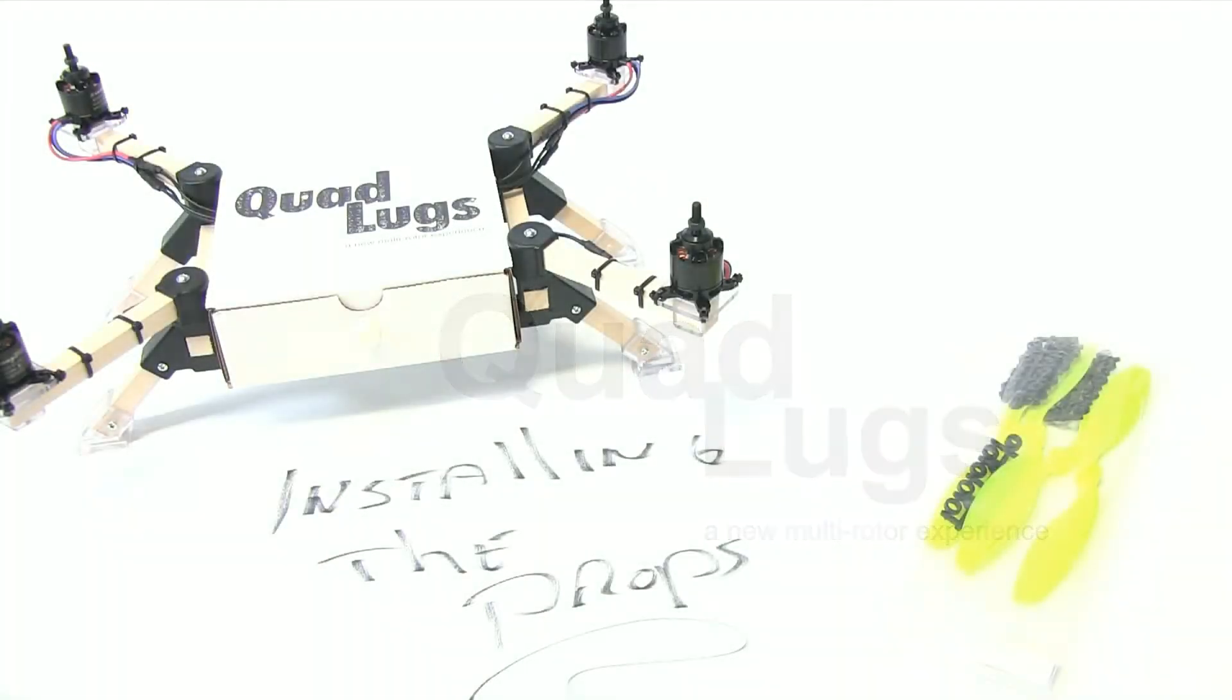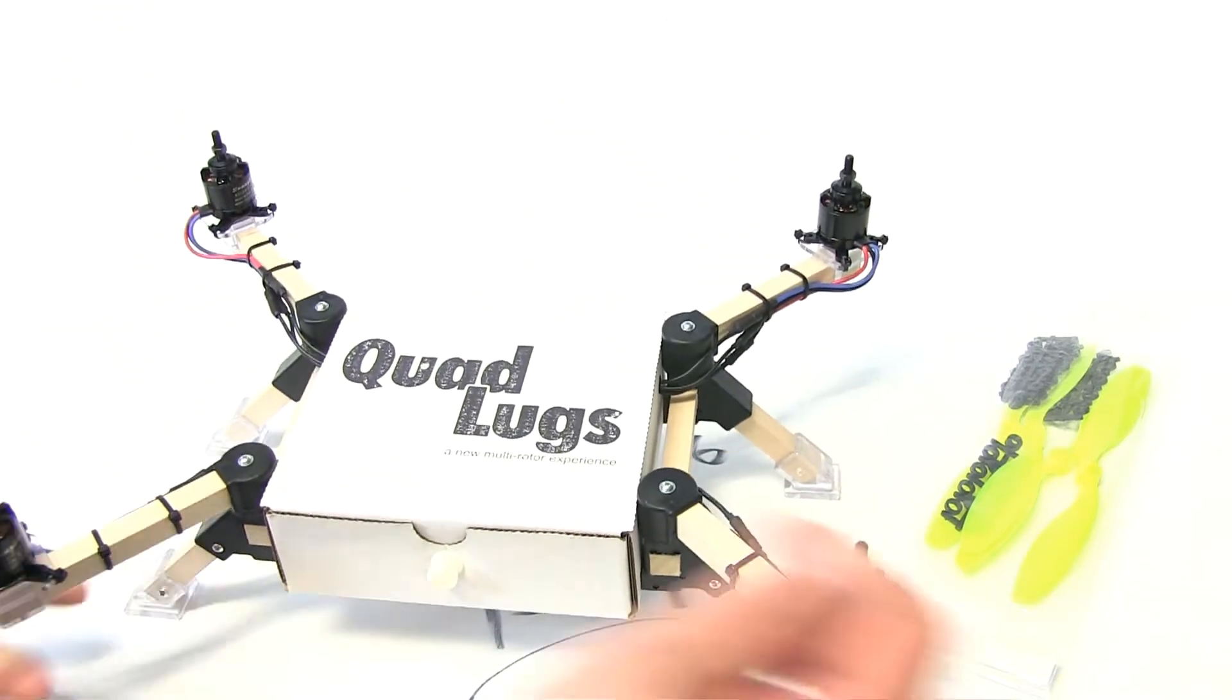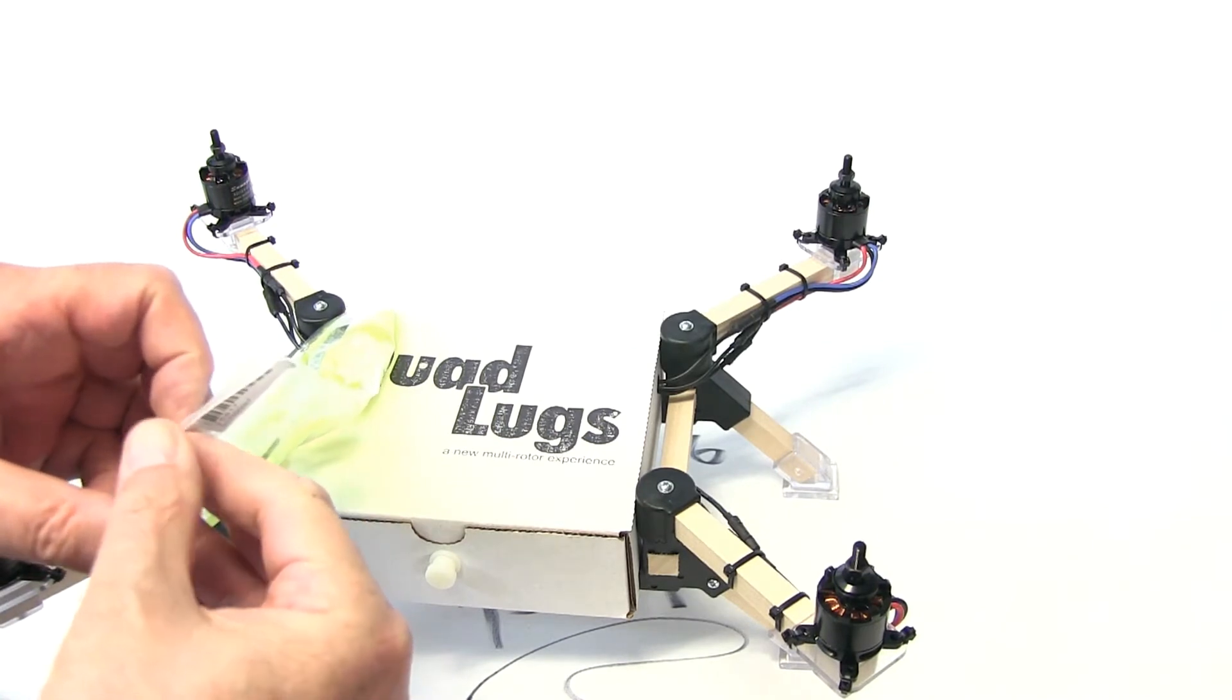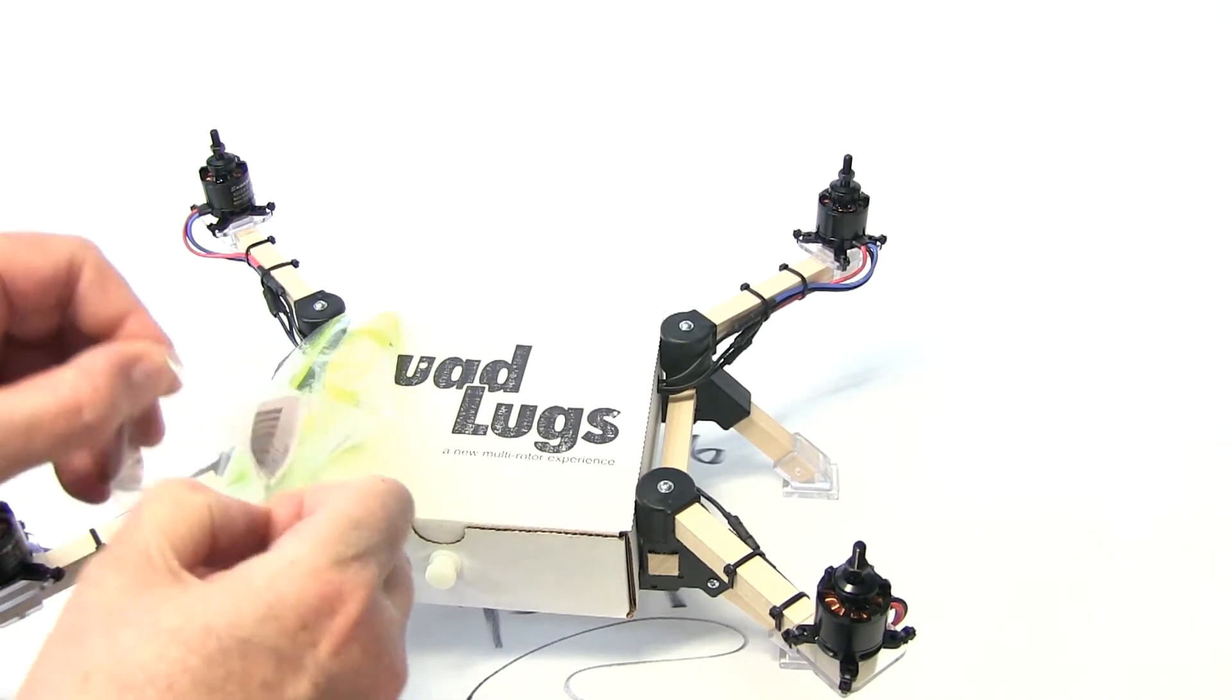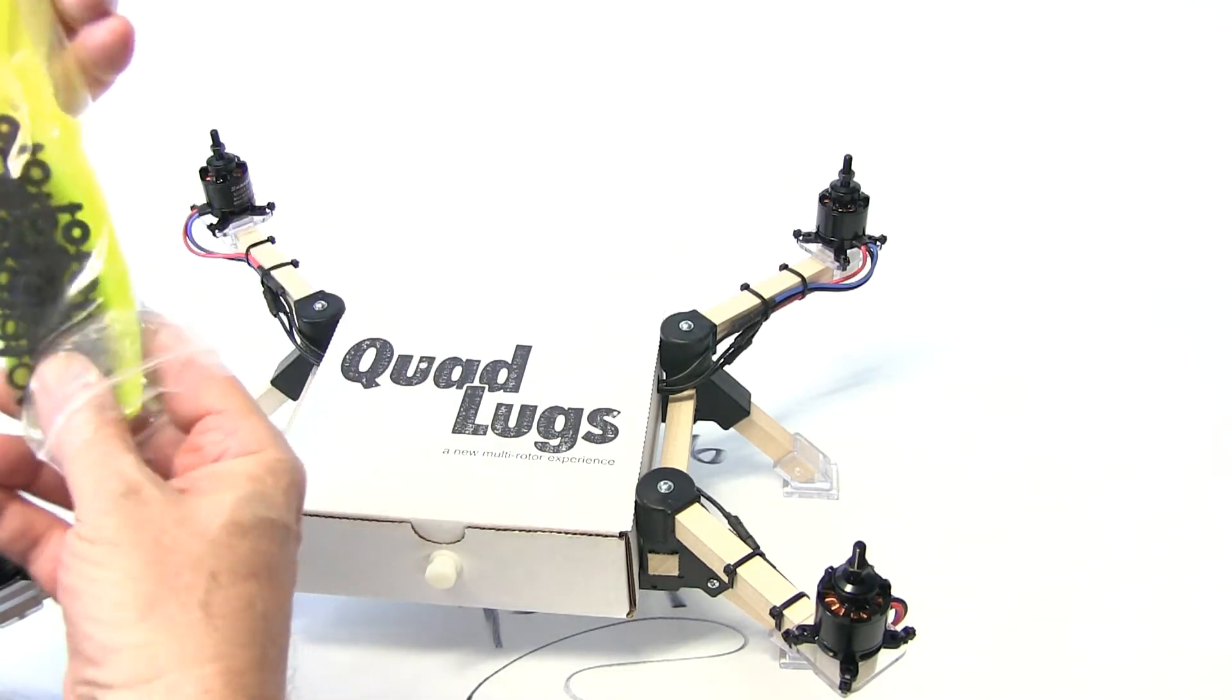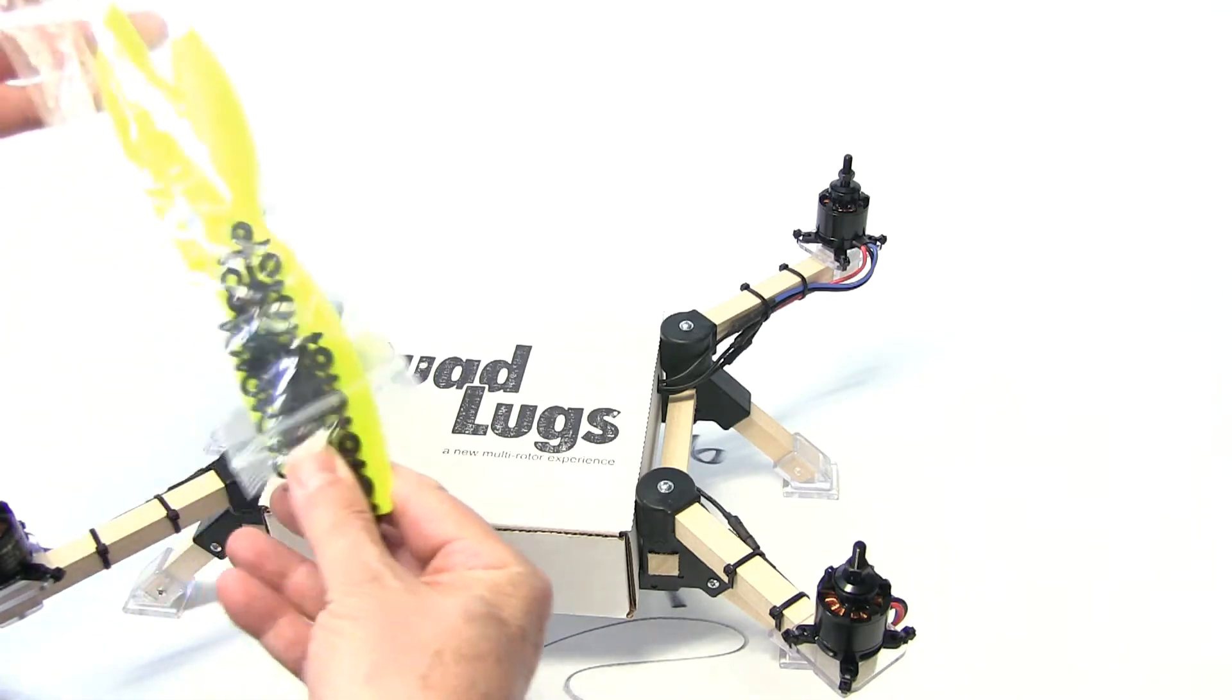This is Dino with Quad Lugs and we're installing the props. We're using the Box Quad 8-4-5 props, and of course bright yellow. We have a few different colors, but today we're using these.